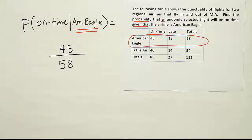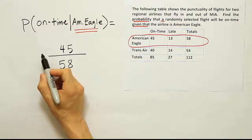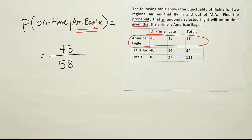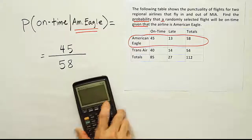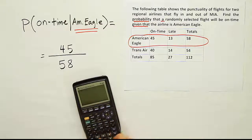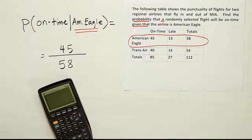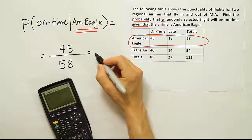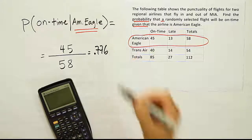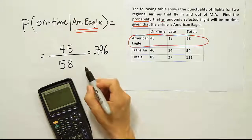When you divide the two of them, you'll get your final answer, which is going to be the on time rate for American Eagle airline flights. Alright, so let's see what we get when we do that. We'll have 45 divided by 58, and when we're done, we get the answer 0.776 or 77.6%.